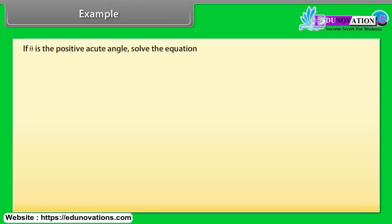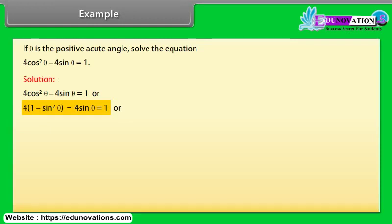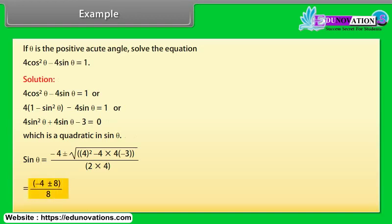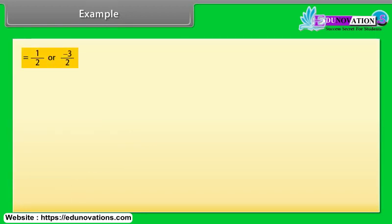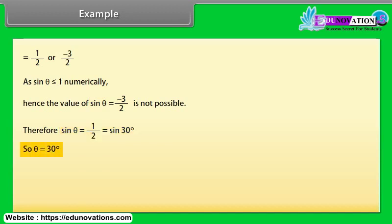Example: If θ is a positive acute angle, solve 4cos²θ − 4sin θ = 1. Solution: 4cos²θ − 4sin θ = 1. Substituting cos²θ = 1 − sin²θ: 4(1 − sin²θ) − 4sin θ = 1, which gives 4sin²θ + 4sin θ − 3 = 0, a quadratic in sin θ. Solving: sin θ = (−4 ± 8) / 8 = 1/2 or −3/2. Since |sin θ| ≤ 1, sin θ = −3/2 is not possible. Therefore sin θ = 1/2 = sin 30°, so θ = 30°.